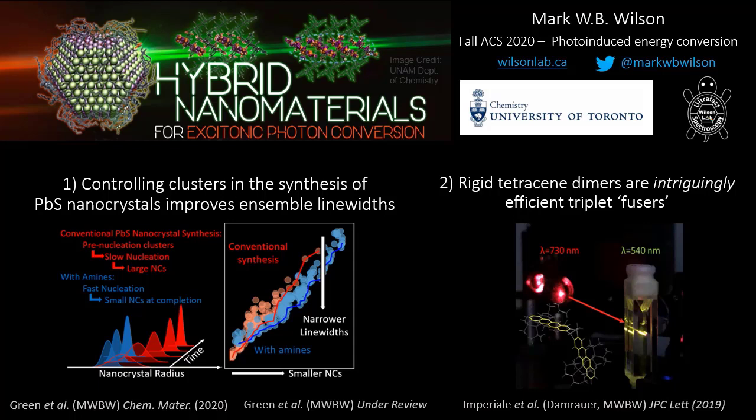In the second story, I want to talk about the intriguing behavior of a rigid, weakly coupled tetracene dimer as a triplet fuser, and what hopeful news this might carry on the ultimate limits of efficiency in triplet fusion upconversion. I should first make clear how these studies relate to the broad target of our current research, which is understanding how to assemble different kinds of excitonic materials to achieve excitonic photon upconversion — that's the big title in the top left.